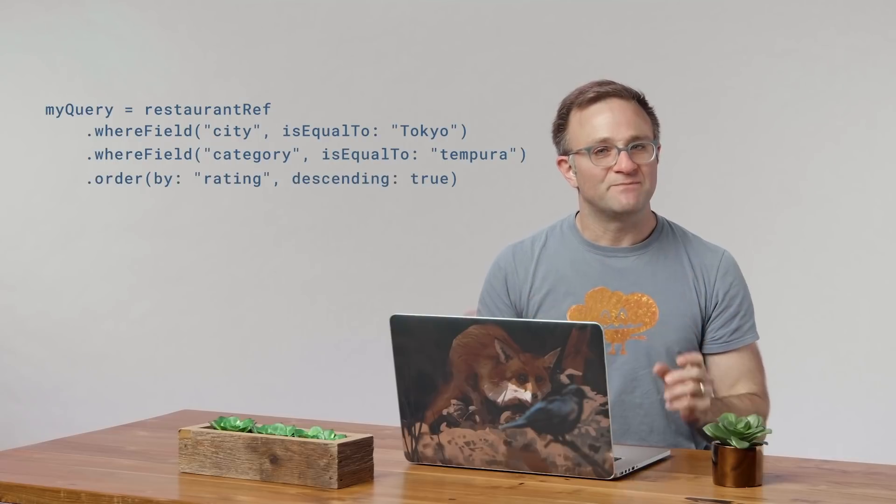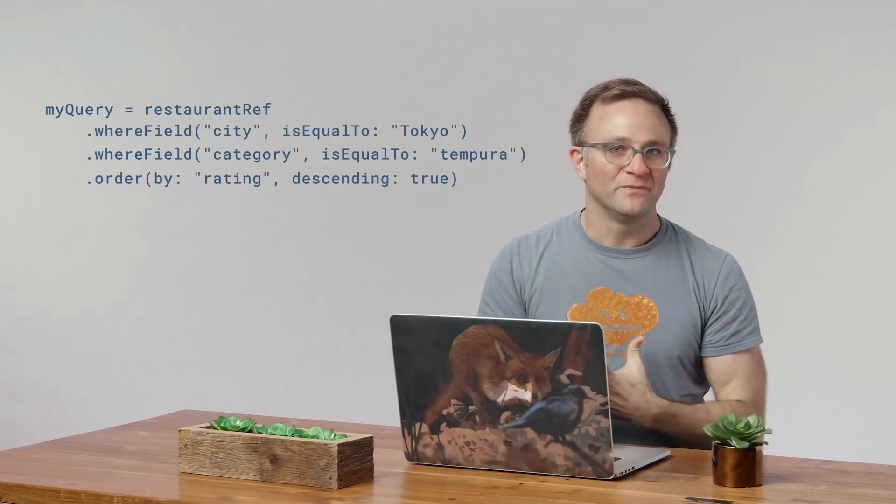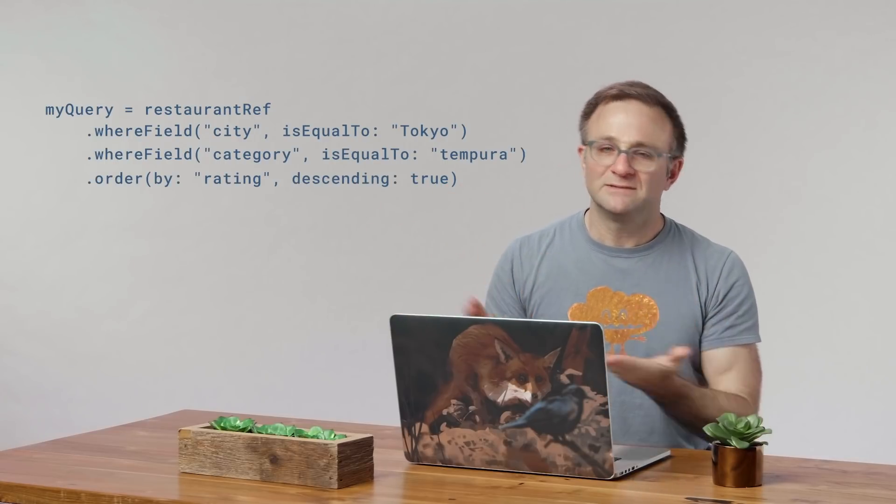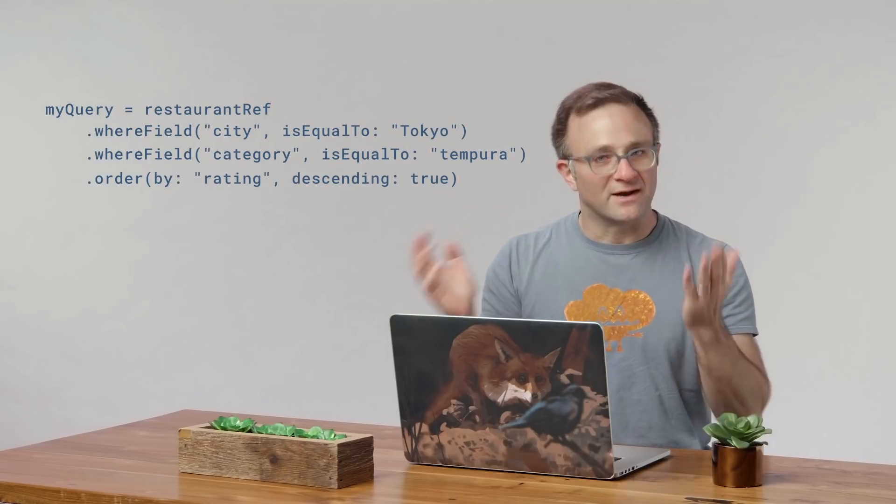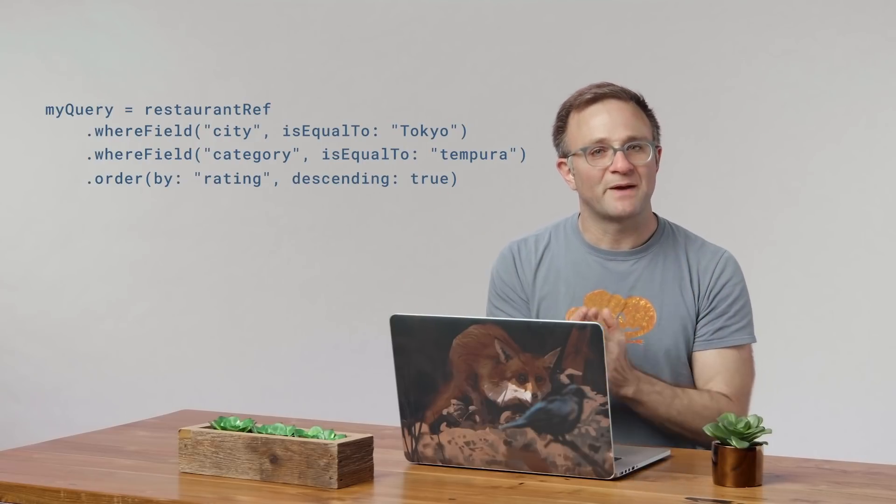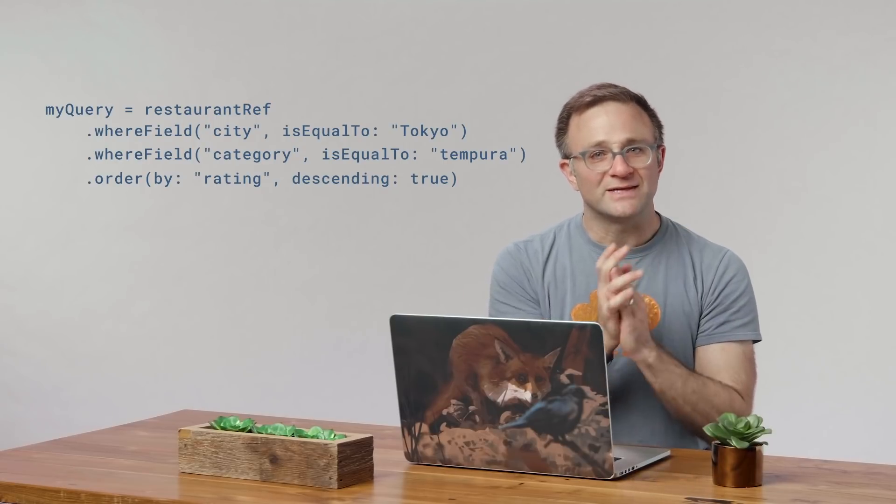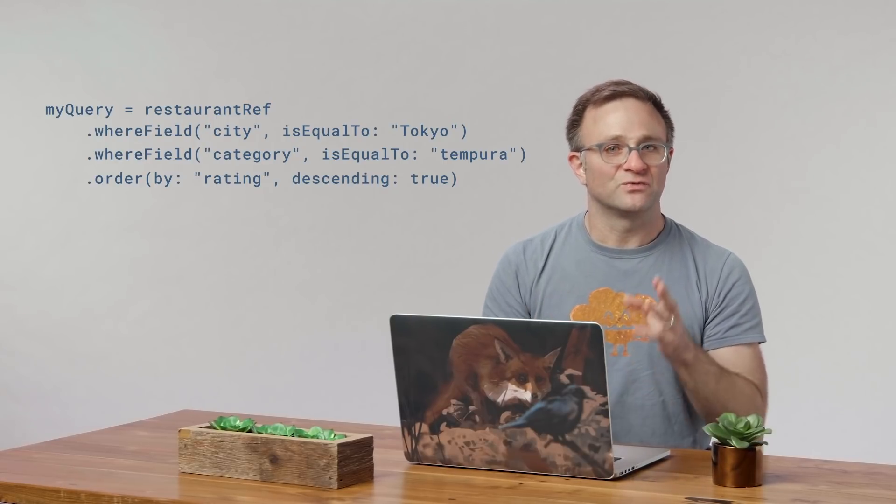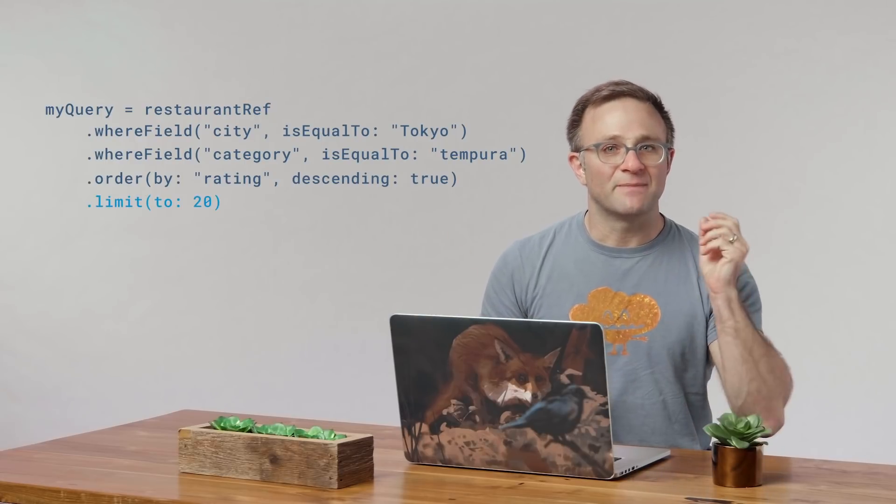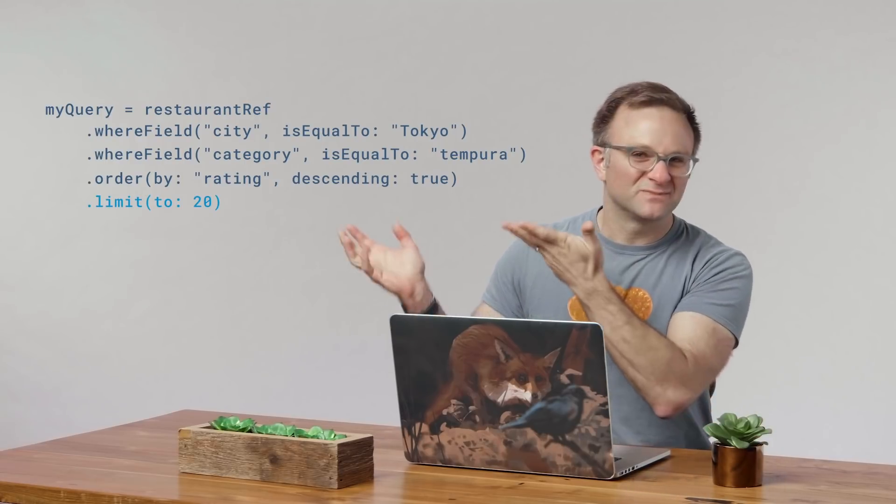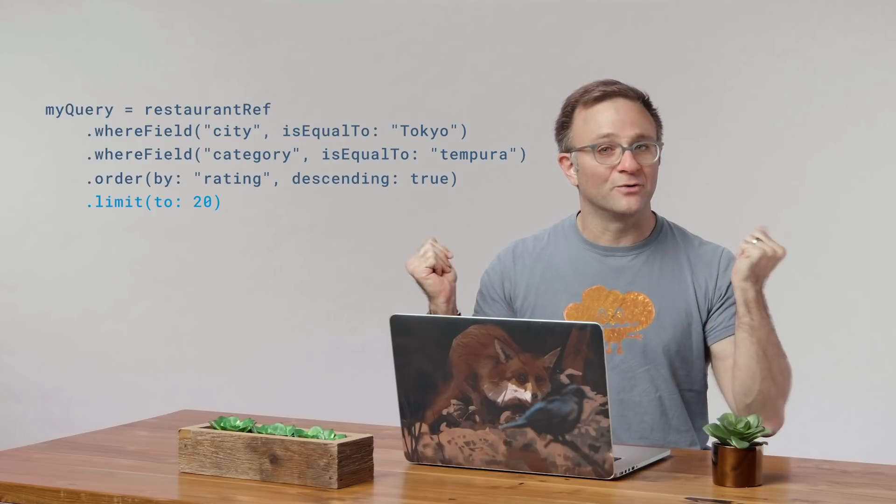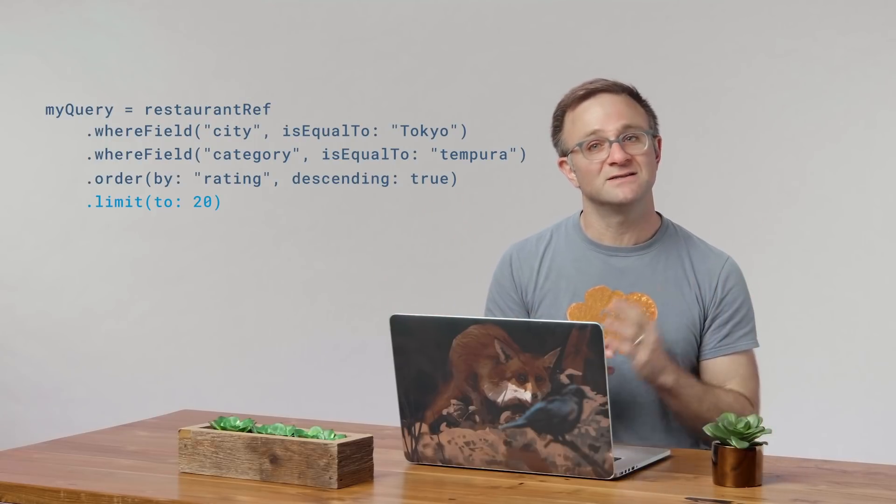Suppose my user is searching for the best tempura restaurants in Tokyo. Well, I'll probably start with a query that looks a little like this in the client. We get our tempura restaurants in Tokyo and sort by rating. Now, this query will probably fetch over a thousand documents, so let's tackle the easy part first of limiting our initial results here. This is essentially done by adding on a limit to your query, something like this. And there you go. Just like that, I am already saving tons of data by only loading up 20 documents for that first query.